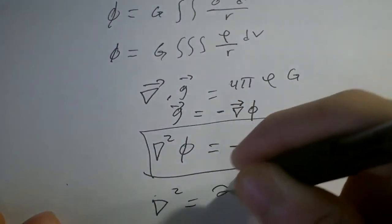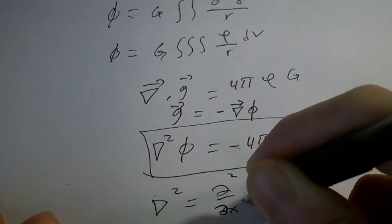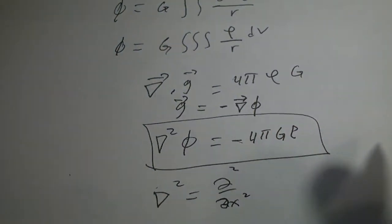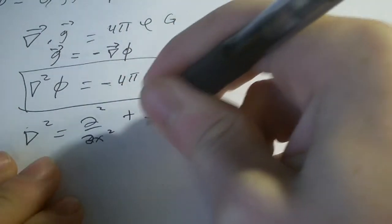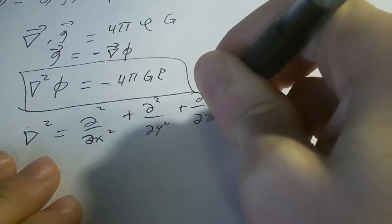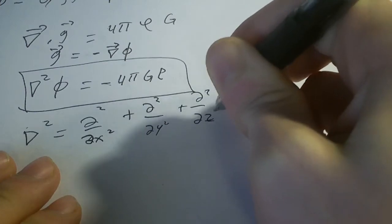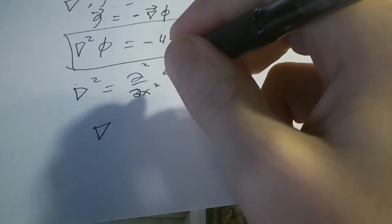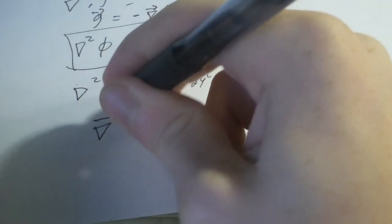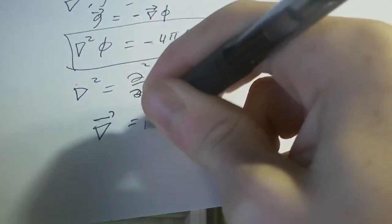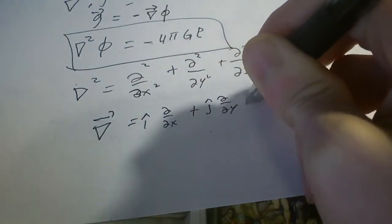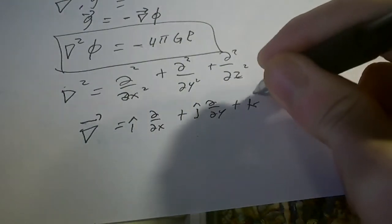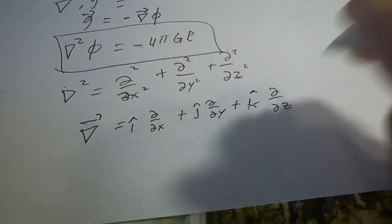Where grad squared equals d²/dx² plus d²/dy² plus d²/dz². And the gradient operator is i d/dx plus j d/dy plus k d/dz.